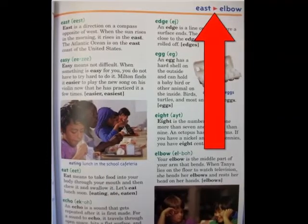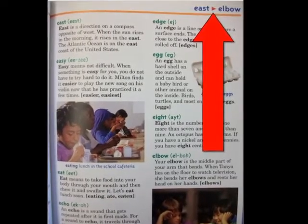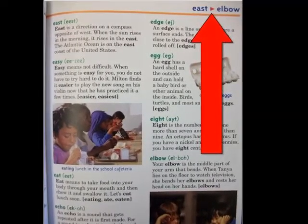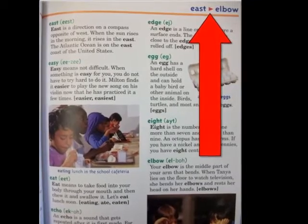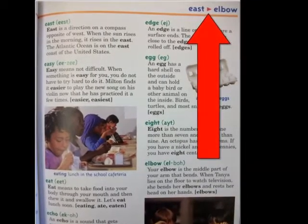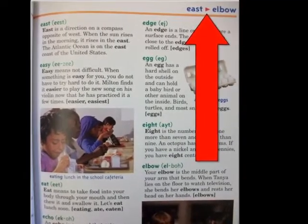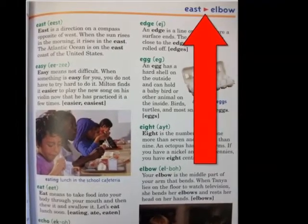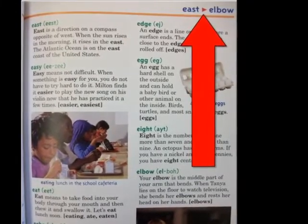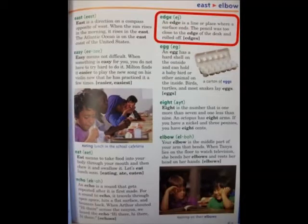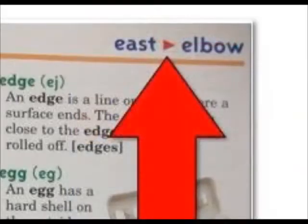When you have found a page matching the letter your word begins with, look at the two words at the top of the page. Our example word, edge, falls between these two words in ABC order. That means you will find the definition of edge on this page. And there's the word edge at the top of the second column. The two words at the top of the page have a name — do you know what they're called?